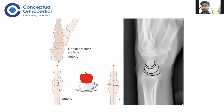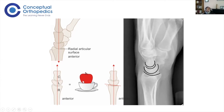On the lateral view, think of a straight line from the radius to the lunate to the capitate to the third metacarpal. Describe them like a plate, a cup on the plate, and something sitting on the cup — like an apple or banana — that's the capitate. This should follow the metacarpal, roughly five to ten degrees, and that's how it should align.